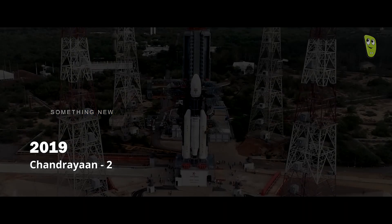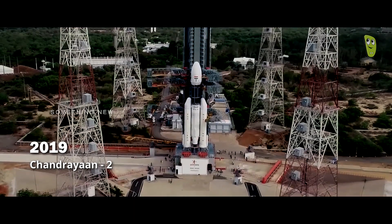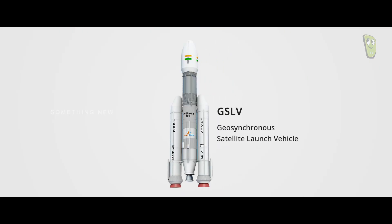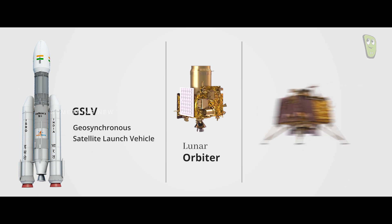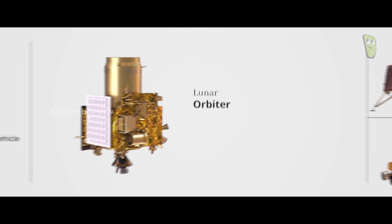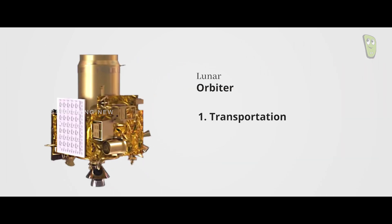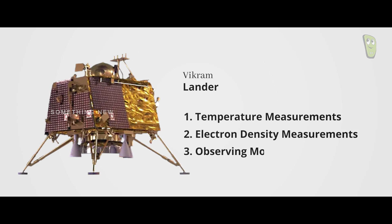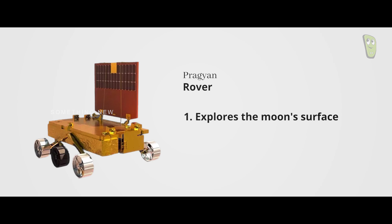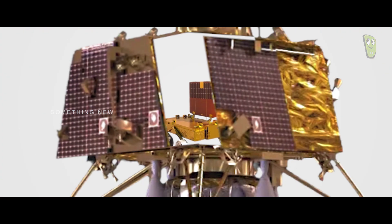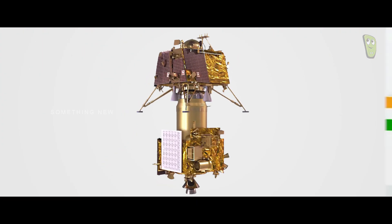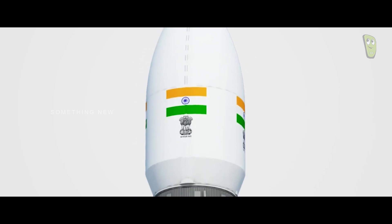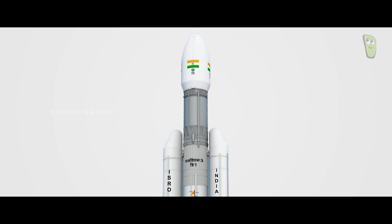This time India decided to land on the moon with Chandrayaan-2, which mainly has three payloads: orbiter, lander, and rover. The orbiter is used for transportation, communication, and moon observation. The lander is employed for temperature and electron density measurements, observing moonquakes, and more. The rover explores the moon's surface. The rover is inside the lander, which is attached to the orbiter. Let's break down this mission into 15 key stages.